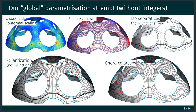But with a slight difference: we wanted to get rid of the integers in the formulations. Our beginning is similar — we build a seamless parametrization, which is a kind of integration of the cross field, with grid-preserving constraints on the CAD graph and on the boundary.